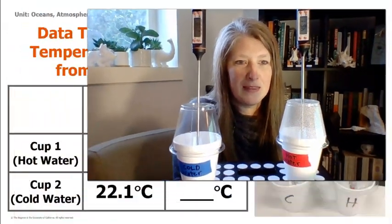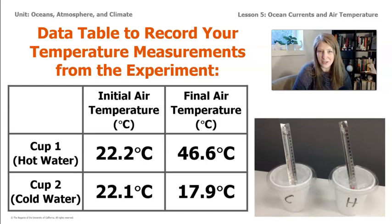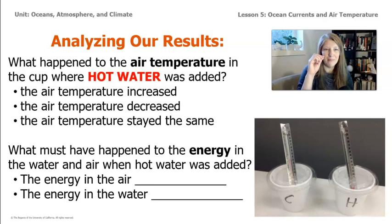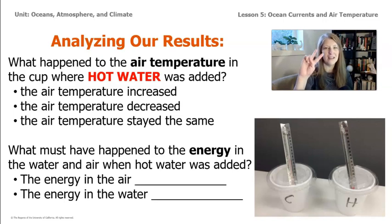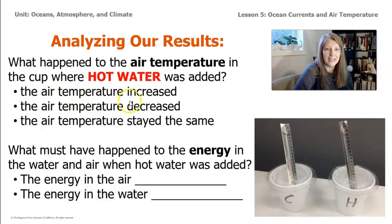As we can see from the data we've collected, the temperature in both cups changed. In the cup with the hot water added, the air temperature went up quite a few degrees Celsius. In the cup where the cold water was added, the temperature went down quite a lot as well. What happened to the air temperature in the cup where hot water was added? The cup with the hot water added started at 22.2 degrees, but after two minutes it had risen to 46.6 degrees — an increase of about 24 degrees Celsius. So we can say with confidence that the air temperature increased when the hot water was added.